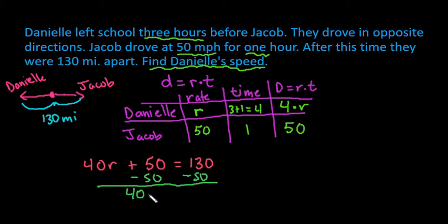And we get 4r—sorry, I don't know why I put 40, I just looked at that and went that does not seem right to me. 4r equals 80, so r equals 20 miles per hour. So we end up with a rate of 20 miles per hour.